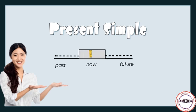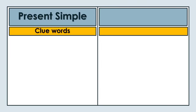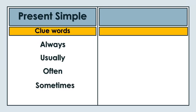Present Simple versus Present Continuous. Present Simple clear words: always, usually, often, sometimes, never.